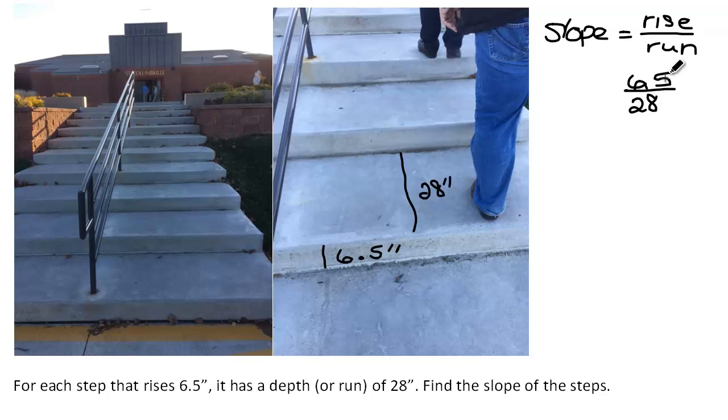We write it as a fraction reduced in lowest terms. The easy way to remove a decimal within a fraction is to multiply both the numerator and denominator by 10, so we get 65 over 280. They both have a 5 in common, so that will reduce to 13 over 56. And we typically use the letter M to stand for slope.